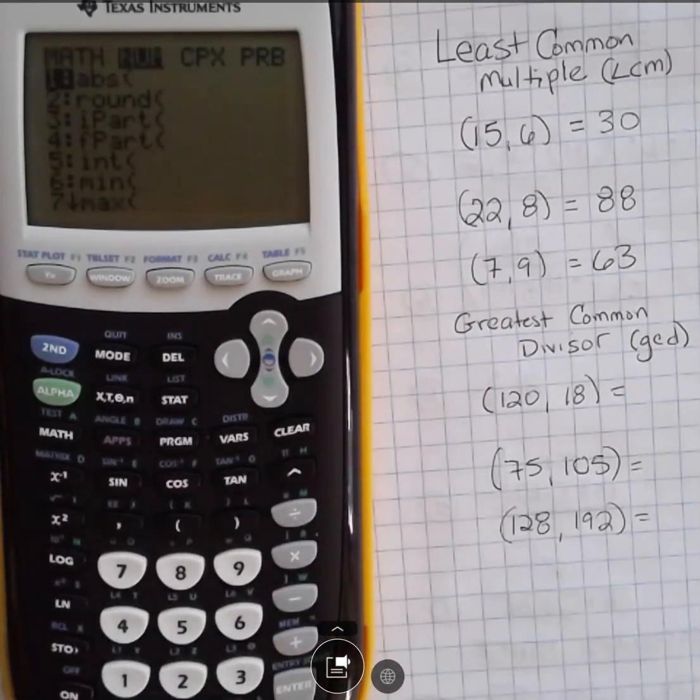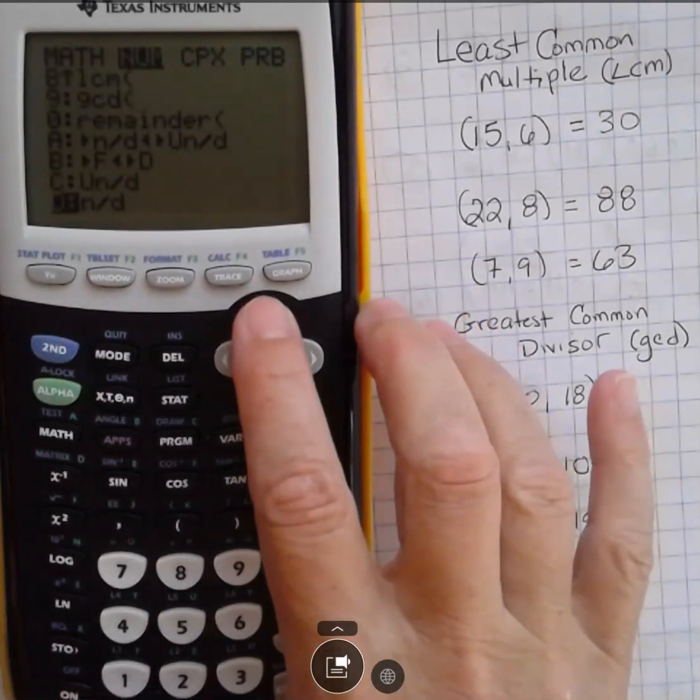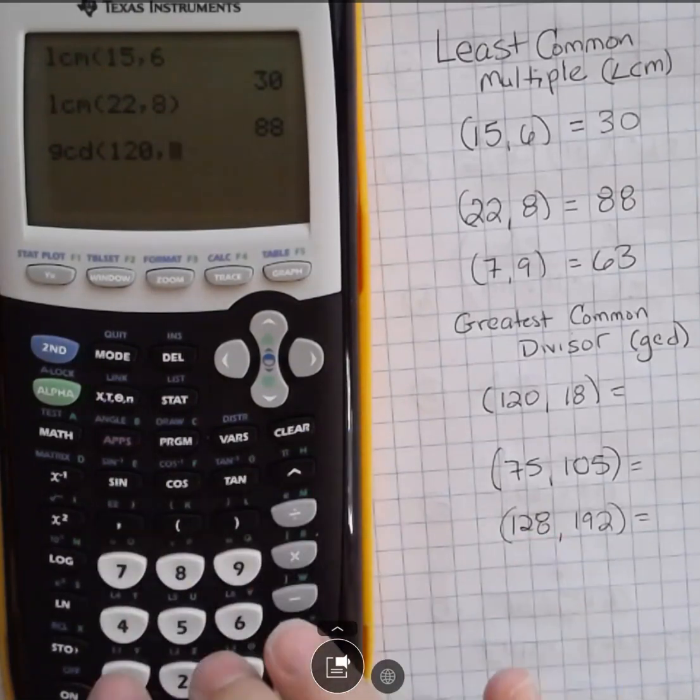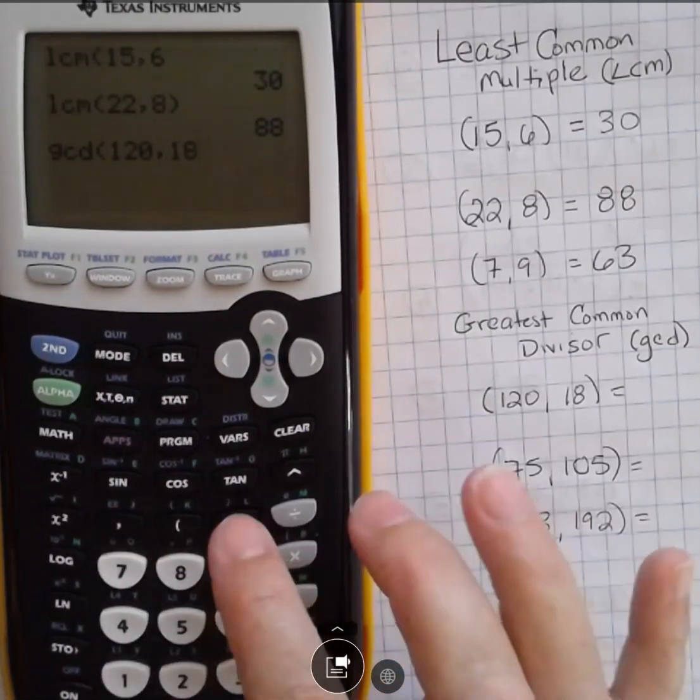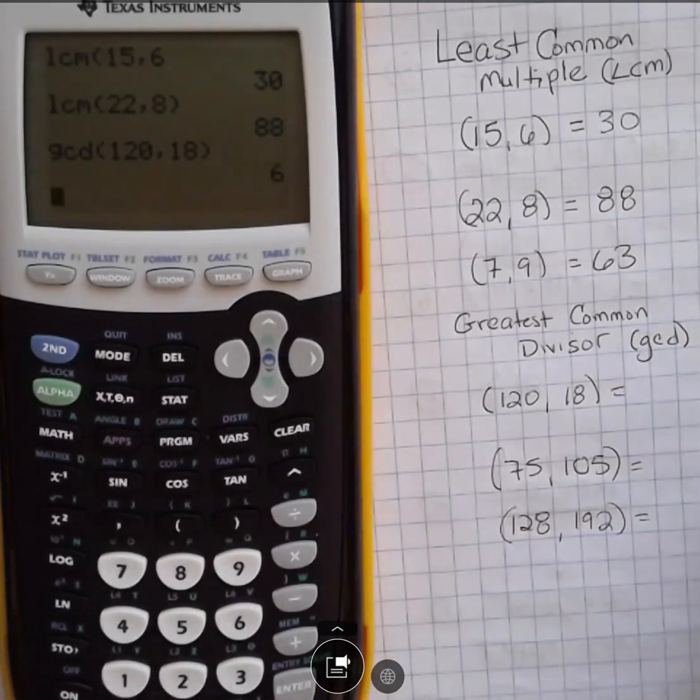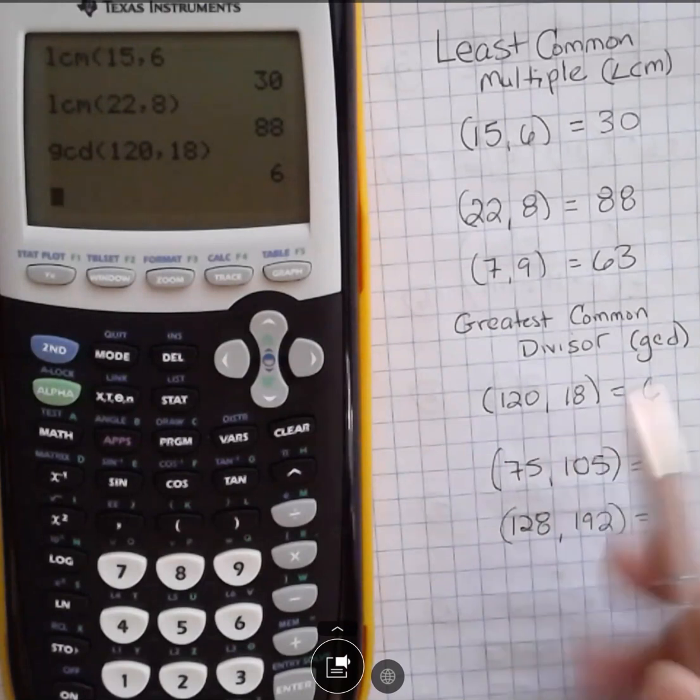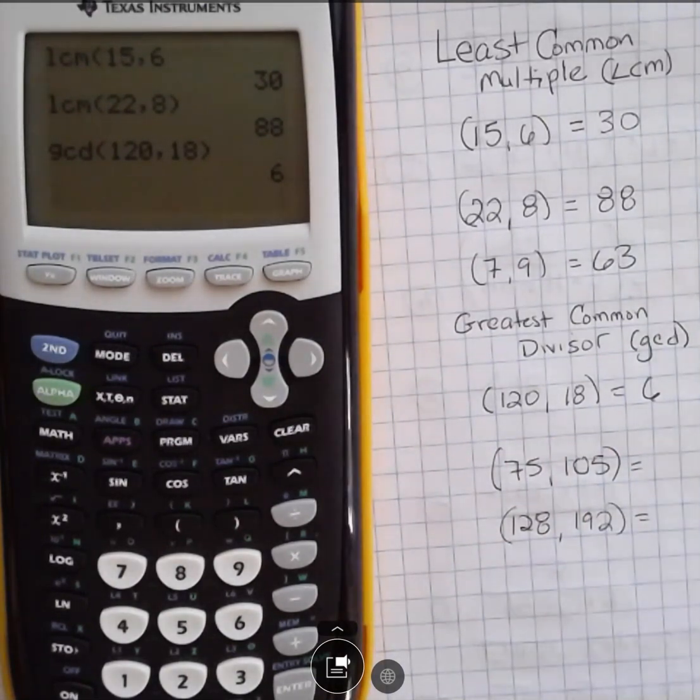Hit math, then go over to numbers. If I scroll up, I can see the GCD is number 9. So I'm going to hit 9, 120 comma 18. Finish your parentheses or not, that's up to you. And that's going to give you 6, and that tells you that the greatest factor they have in common is 6. Both of those are divisible by 6, so 6 is a divisor of those numbers.